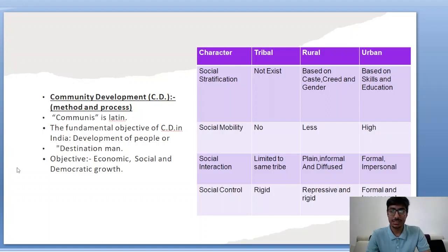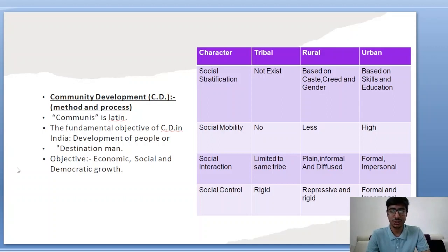Regarding differences between tribal, rural and urban communities: social stratification does not exist in a tribal community, while it exists in rural and urban communities — but the bases differ. In rural communities, stratification is based on caste, creed and gender, while in urban communities it is based on skills and education level. Social mobility is high in urban communities, very low in rural, and non-existent in tribal communities. Social interaction is limited to the same tribe in tribal areas, plain and informal in rural areas, and formal and impersonal in urban areas. Social control is rigid in tribal and rural communities, but more formal and impersonal in urban communities.